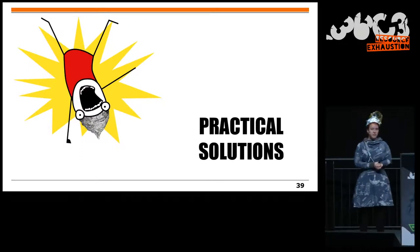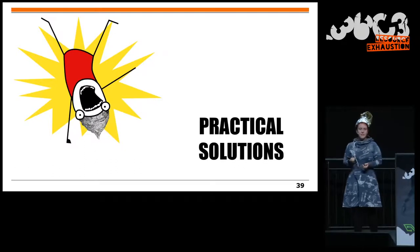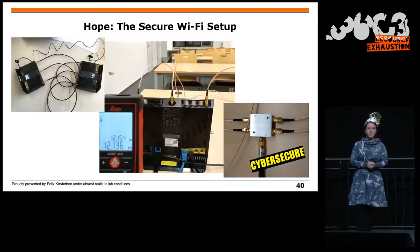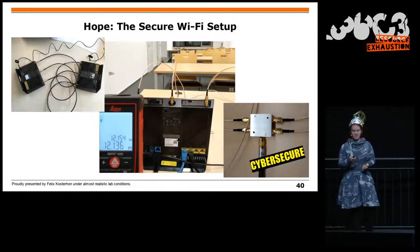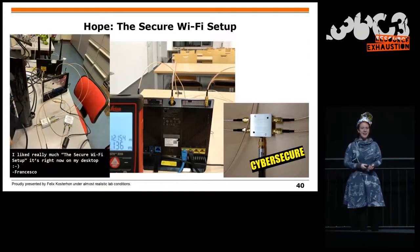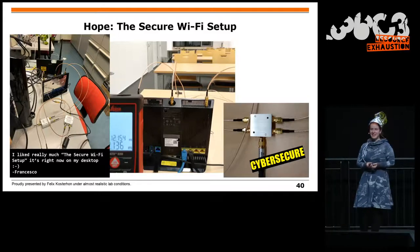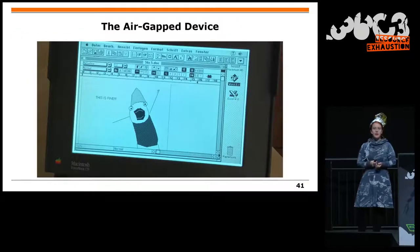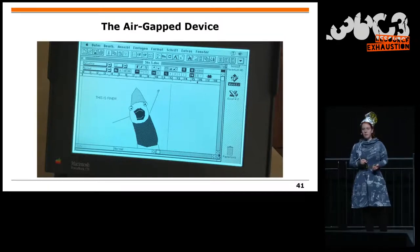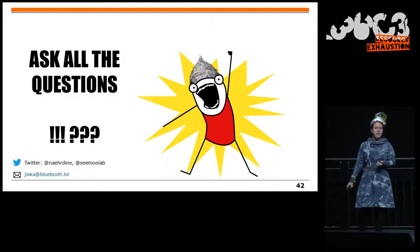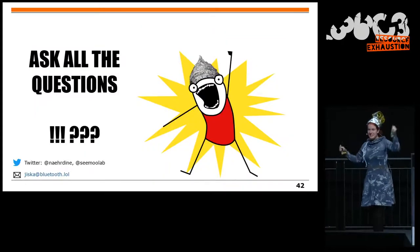Practical solutions at the end of my talk: if you don't have a tinfoil hat, a secure WiFi setup is very important. We use cables instead of antennas. Or use an air-gapped device — like my PowerBook 100, which you can barely get online even if you want to. That makes you much less vulnerable. And with that, we come to questions.